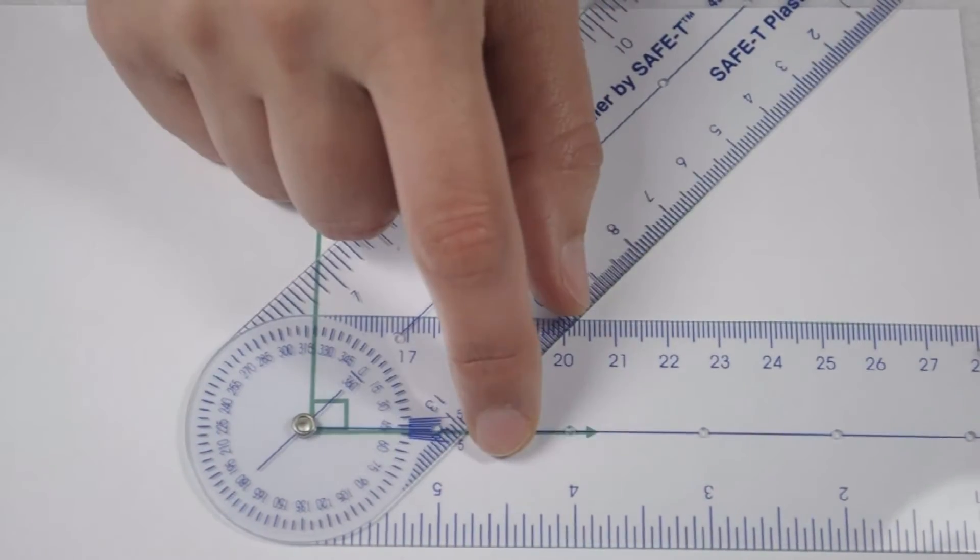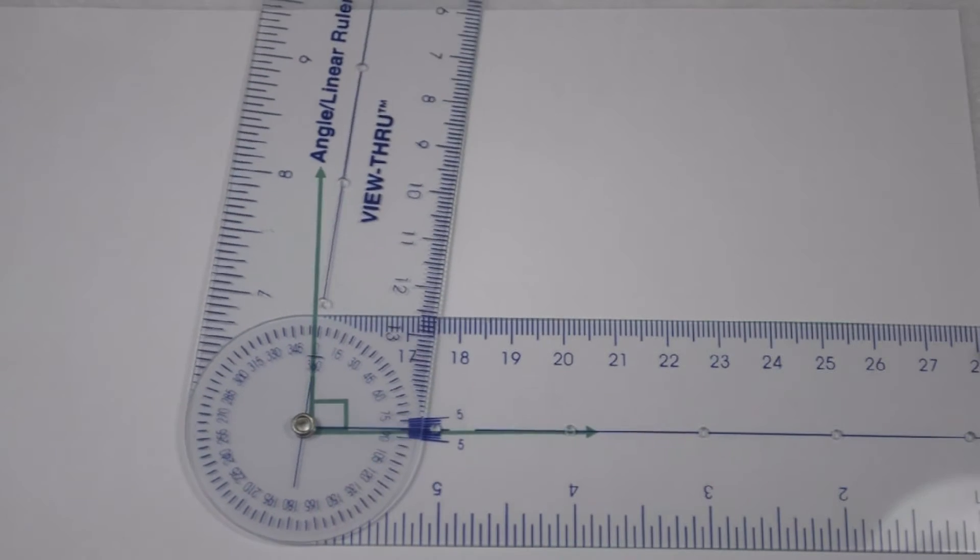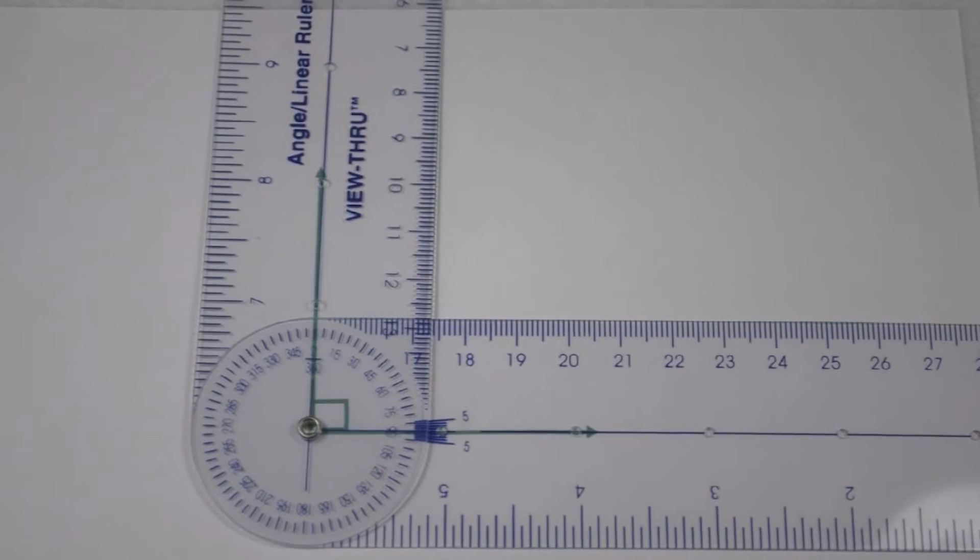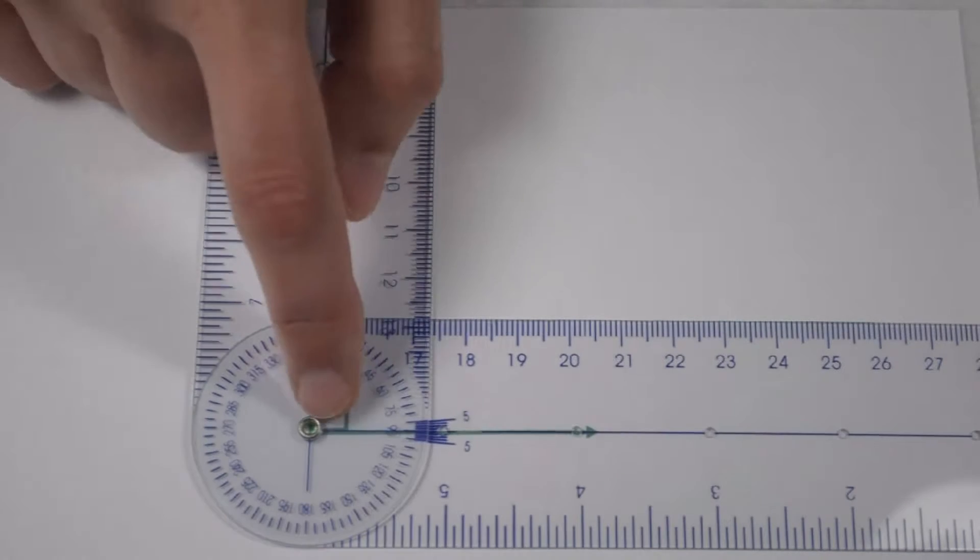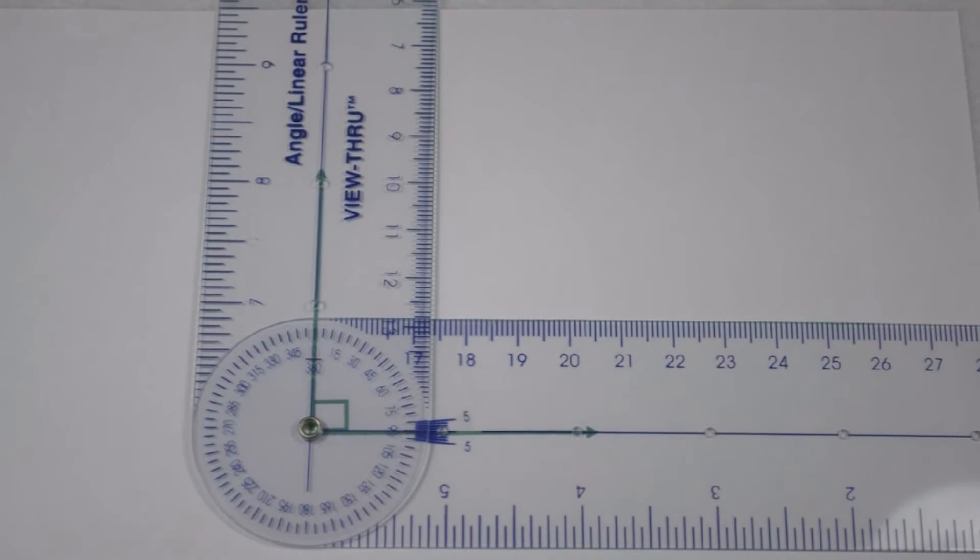I'm going to line up my blue line with my bottom ray, and now I can swing the top arm around until it crosses with my other ray. When I do that, I can then look on the dial to see where it crosses at. We can see, even though it's small, that it crosses at 90 degrees. So we know for sure this is a 90 degree angle.